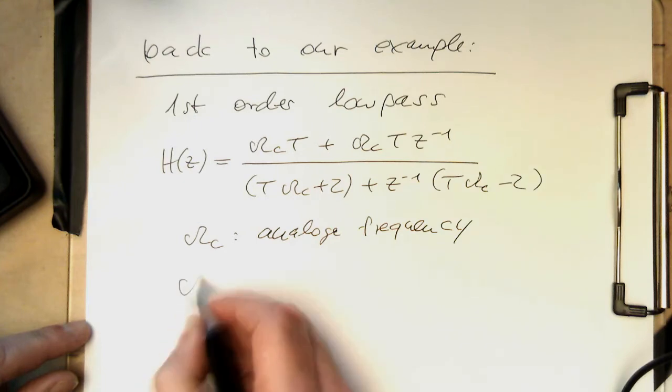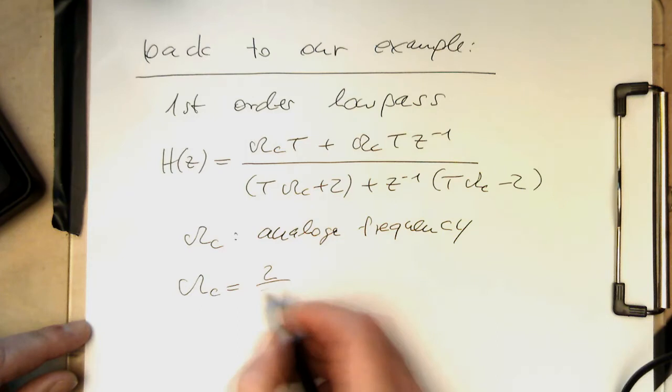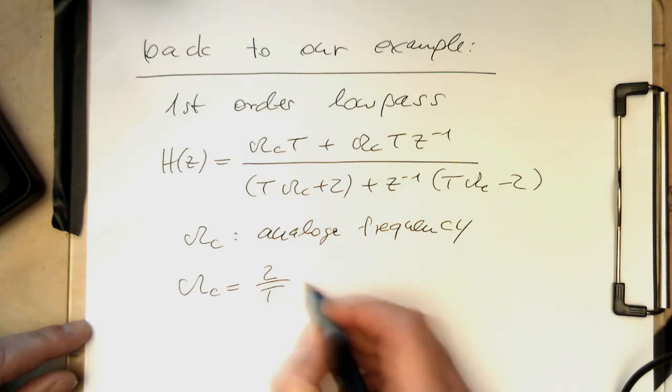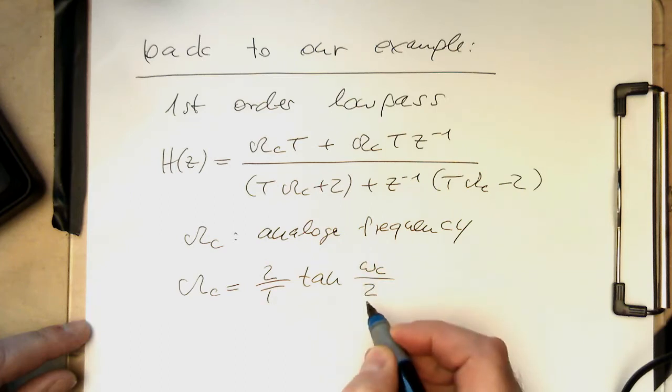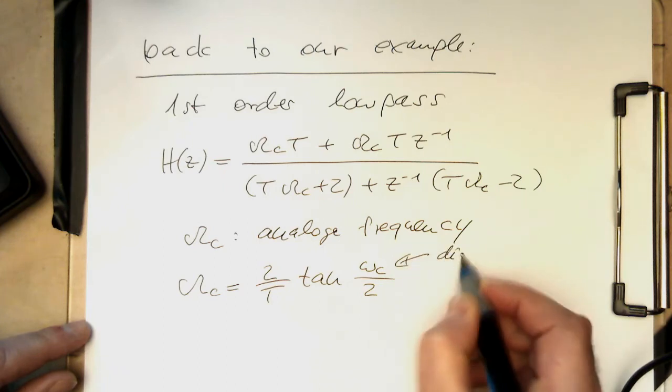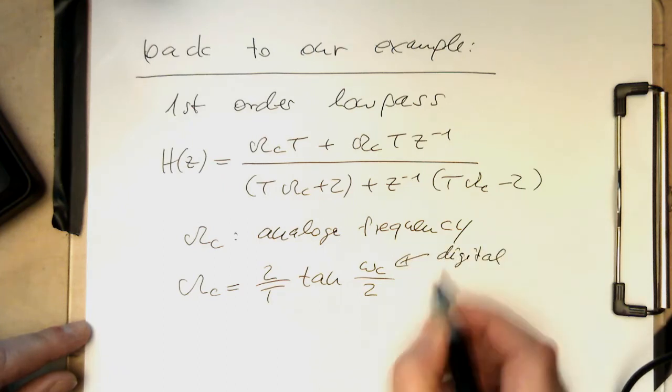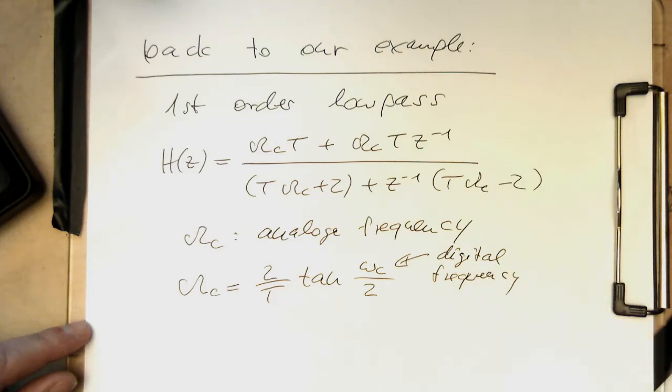Therefore we see omega c equals 2 divided by t tangent of omega c half. So then this is our digital frequency here.